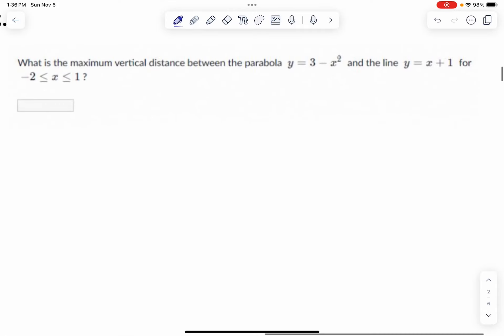In this video we're going to find the maximum vertical distance between the parabola y equals 3 minus x squared and the line y equals x plus 1 on the interval negative 2 to 1.